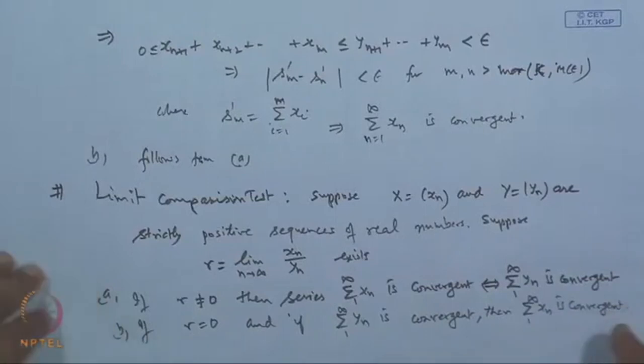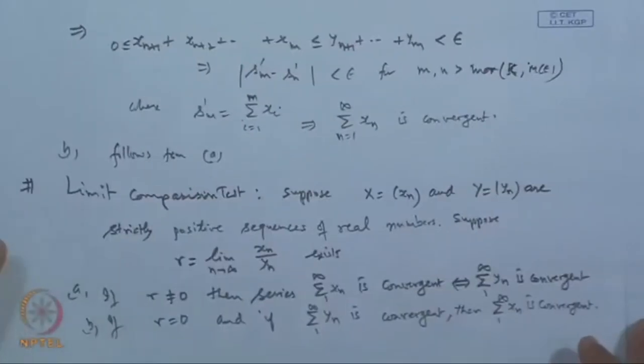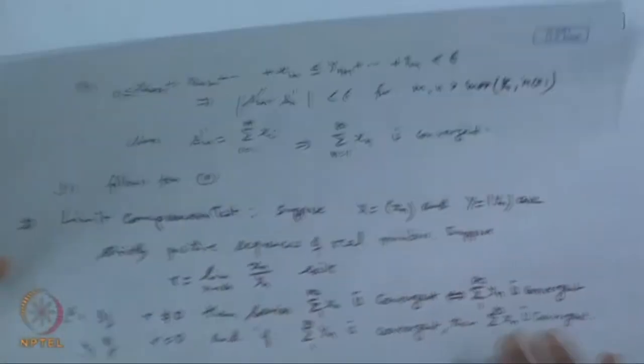There is a limitation in the limit comparison test: we are unable to test the divergence part when r = 0. We cannot claim anything about divergence in that case. But for establishing convergence, which we are more interested in, this test is very useful.